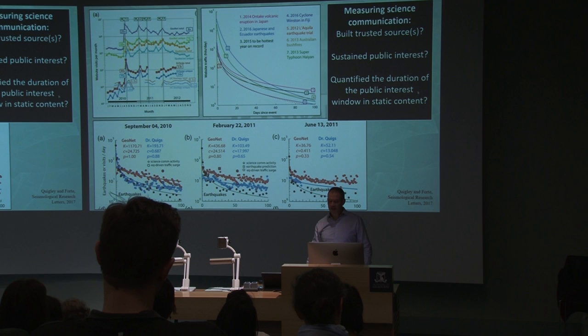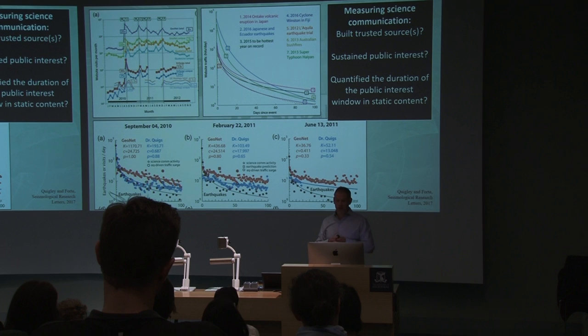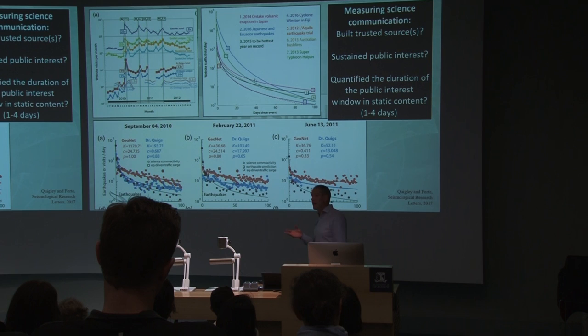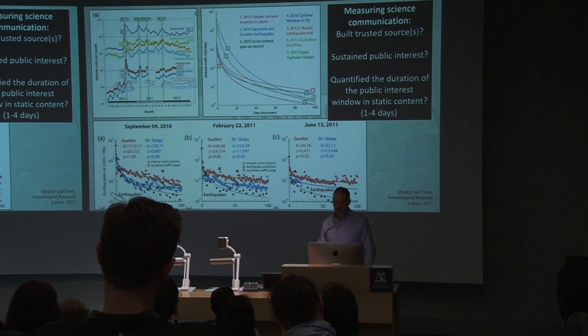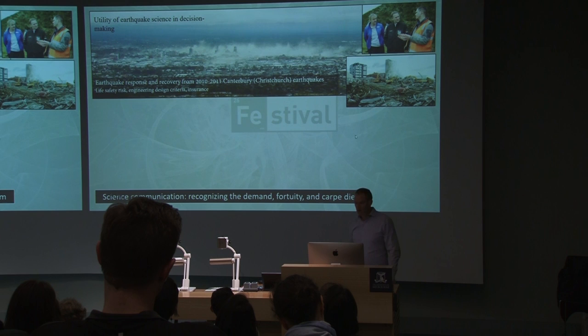The last question: how long does the public stay interested in static content? We've taken scientific articles published on The Conversation and looked at their daily traffic in days since the event. We're actually able to say that probably within one to four days, half as many people are interested in your content as they were on the first day it was released. So the half-life of science communications that are static is probably about one to four days. There are, of course, resurgences that might be stimulated by a whole variety of things, but that's something that we need to think about.